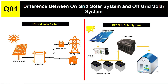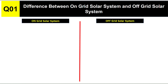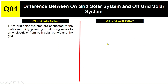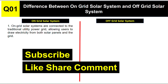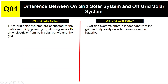Now we will see the differences in detail. On-grid solar systems are connected to the traditional utility power grid, allowing users to draw electricity from both solar panels and the grid. Off-grid solar systems operate independently of the grid and rely solely on solar power stored in batteries.